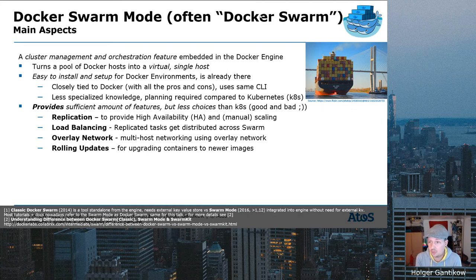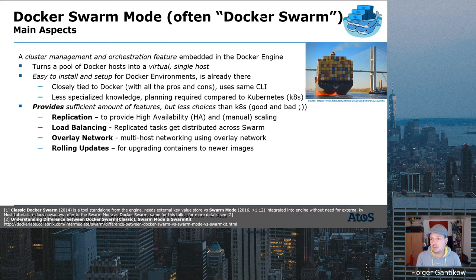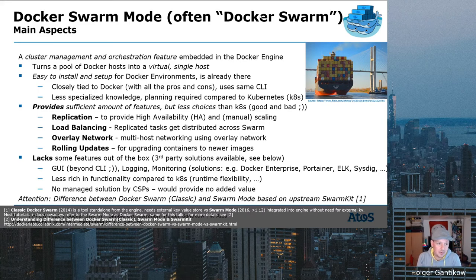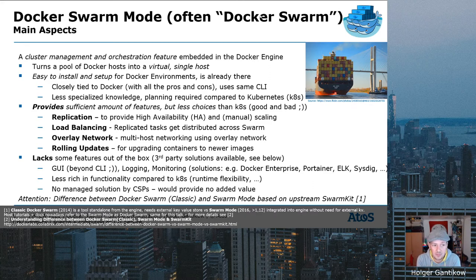What Docker Swarm does provide is support for replication to deliver high availability and scaling. It also supports replicated tasks distributed across the swarm, multi-host networking using overlay networks, and a rolling update mechanism for upgrading containers to new images. However, it does lack some features out of the box, so the out-of-the-box experience may be limited if you have high requirements in certain areas — though be aware there are third-party solutions to address this.